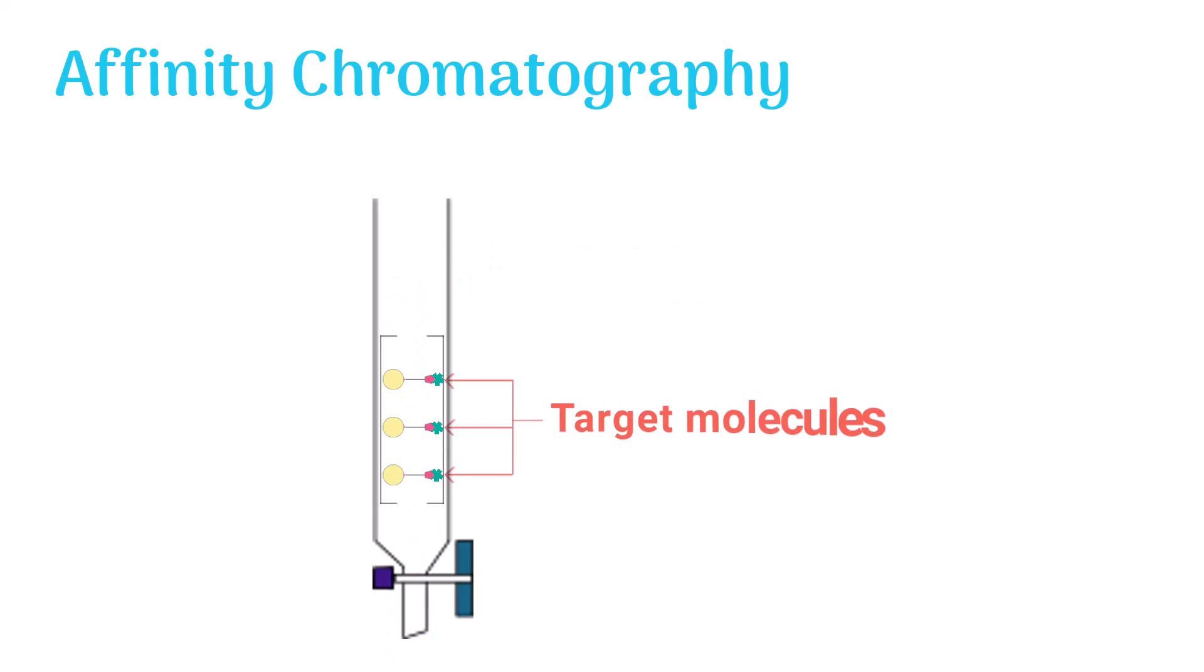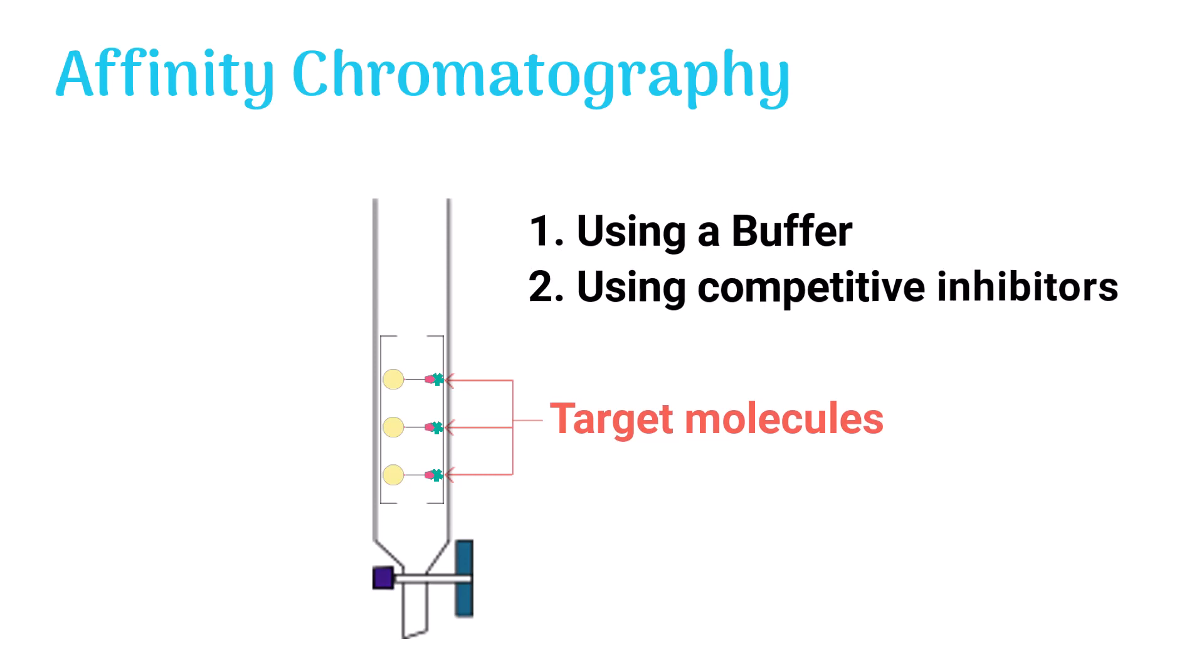Now the bonded or target molecules are usually dragged out of the column in two distinct ways: using a buffer and using competitive inhibitors.